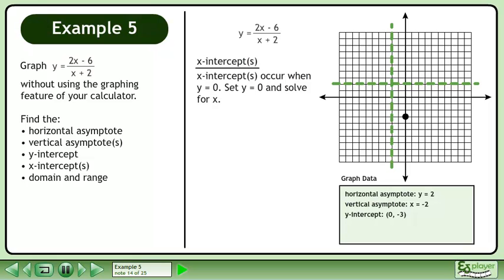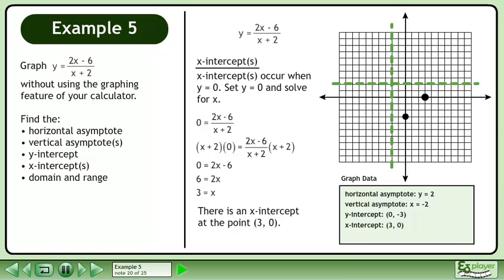Now we will find the x-intercepts. X-intercepts occur when y equals 0. Set y equal to 0 and solve for x. Plug in 0 for y. Multiply both sides by x plus 2. This gives us 0 equals 2x minus 6. Add 6 to both sides of the equation. Divide both sides by 2 to get x equals 3. There is an x-intercept at the point (3, 0).